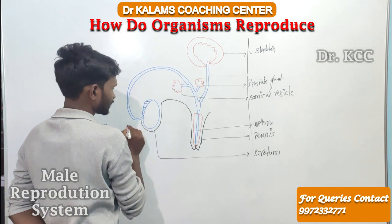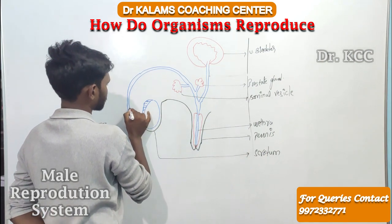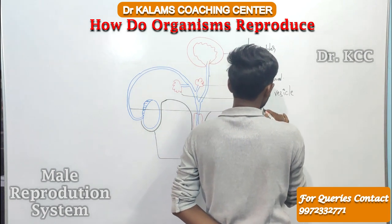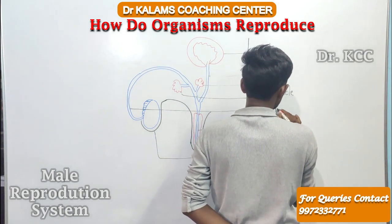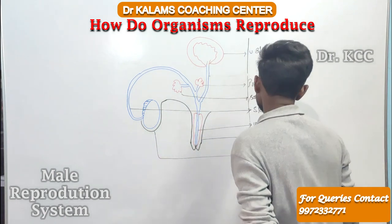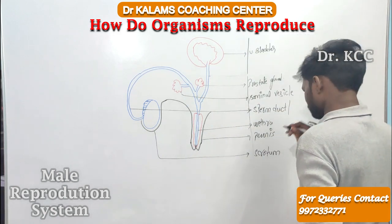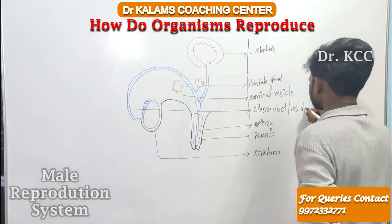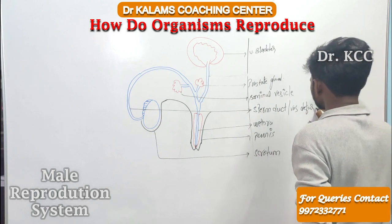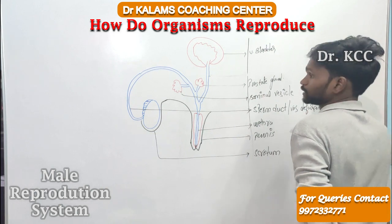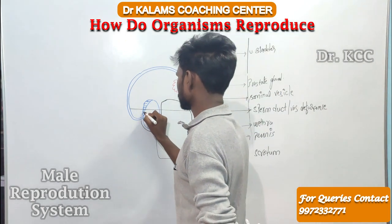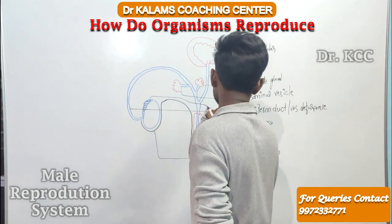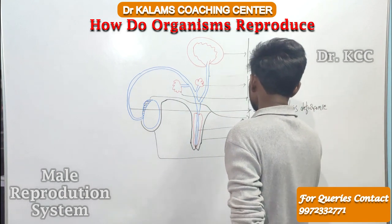This tube is called your sperm duct — just like females have an oviduct, males have a sperm duct. This is also called the vas deferens. And this, with the brush-like marking around the testes, is your epididymis.